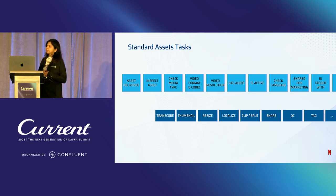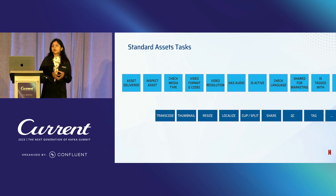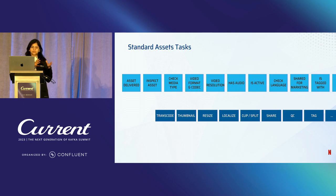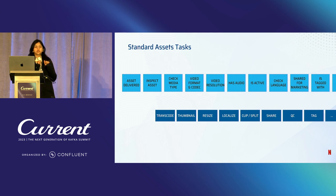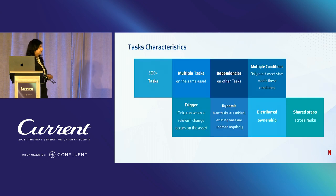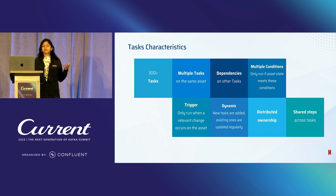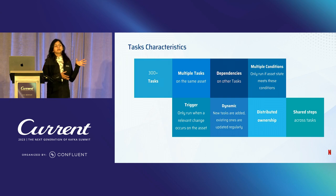Here are some of the standard tasks executed during the asset lifecycle. Some tasks can be independently executed, while some are dependent on the completion of others. For example, for every new asset, a content inspection task has to execute first to trigger video encoding or image thumbnail generation depending on the inspected content type. We have hundreds of tasks running on media assets, and a typical asset will have over a dozen tasks. New tasks may be introduced anytime, and tasks can be owned by one or multiple studio applications.